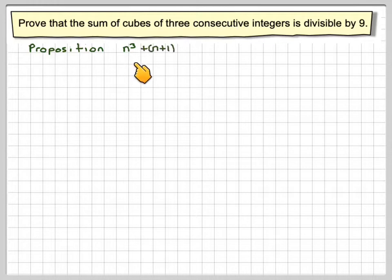So the proposition is that n cubed plus its next number, n plus 1 cubed plus n plus 2 cubed, is divisible by 9 for all positive integers.